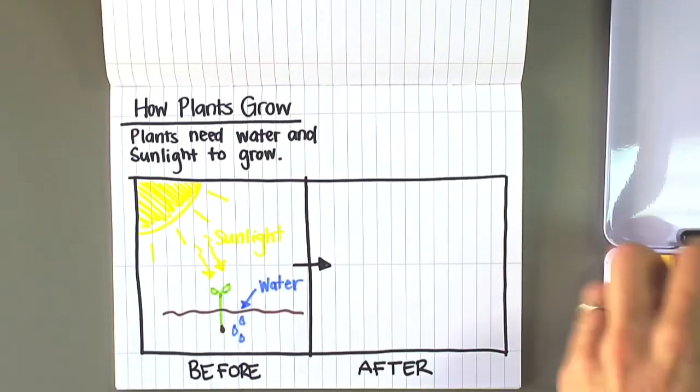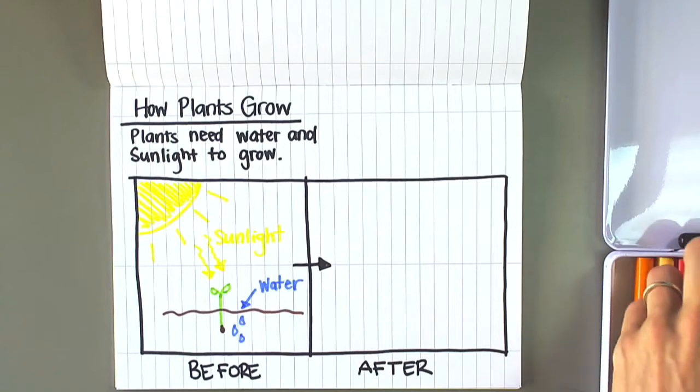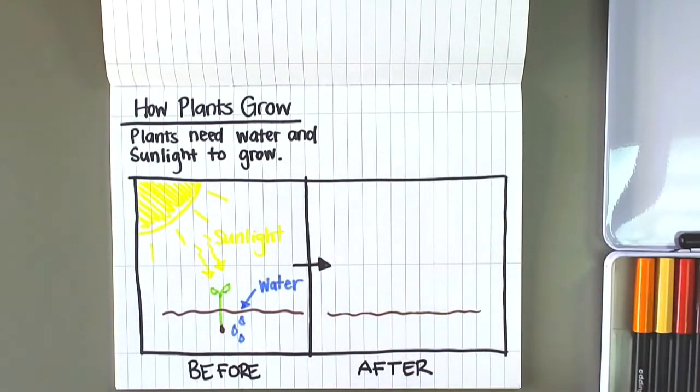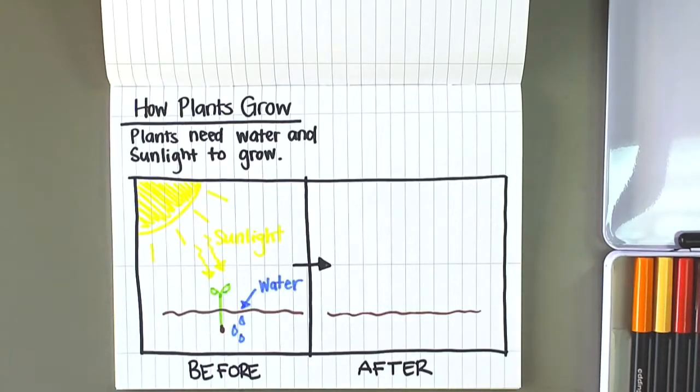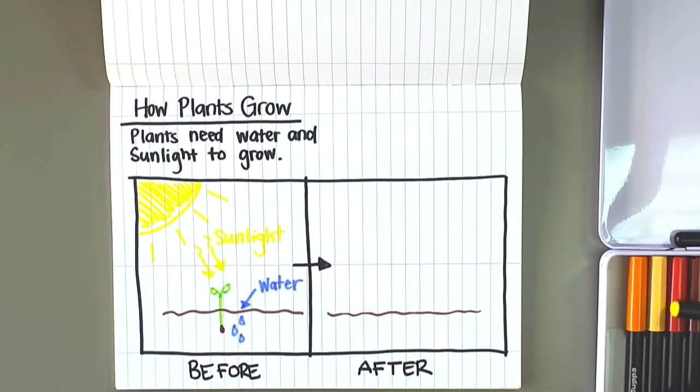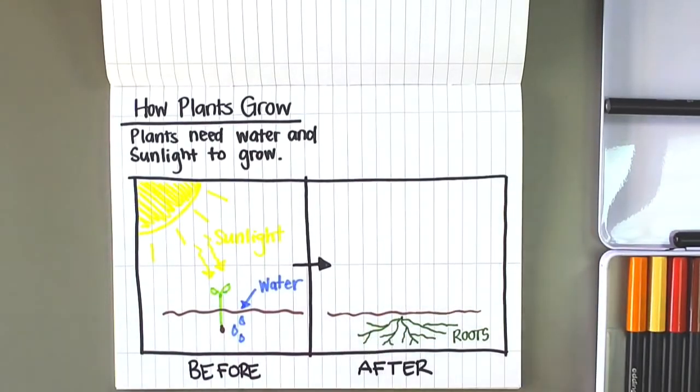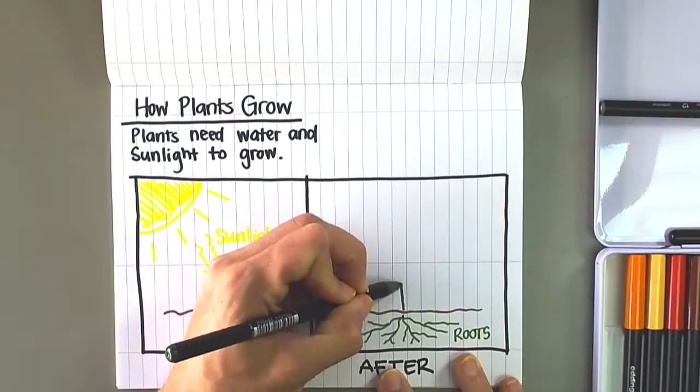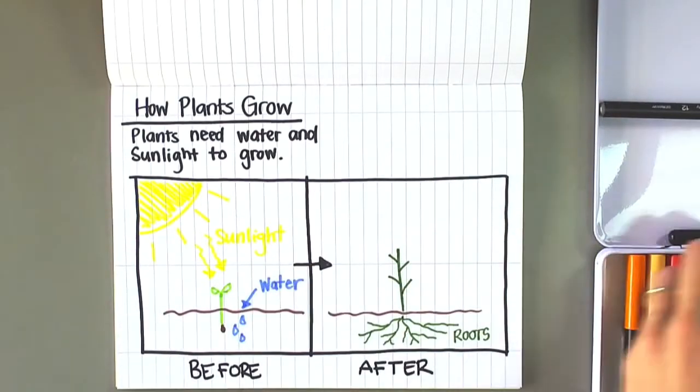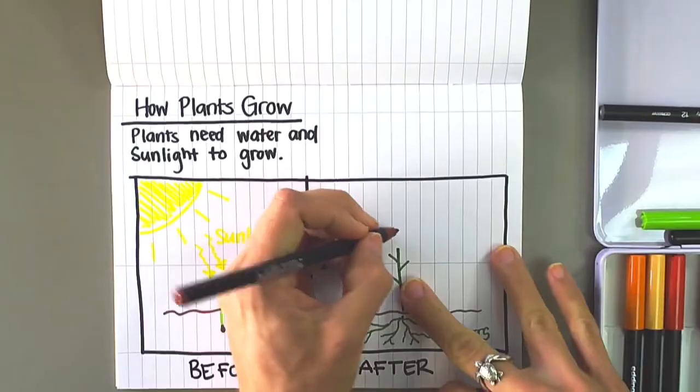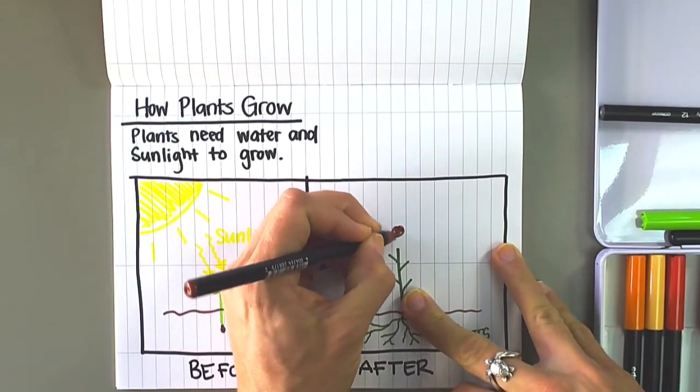So after the plants get the water and sunlight, they have a much more defined root system. Maybe I'll use this darker green.